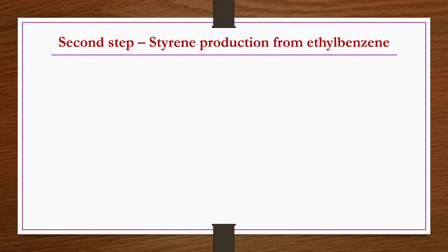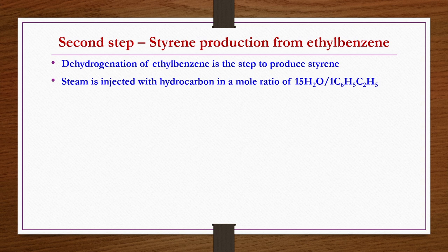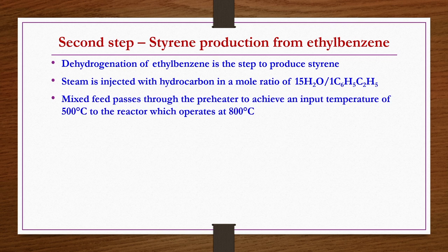Once pure ethylbenzene is obtained, dehydrogenation is carried out to get styrene in the second step. Steam is injected with hydrocarbon in a mole ratio of 15 moles of steam per 1 mole of ethylbenzene. The mixed feed passes through a preheater to achieve an input temperature of 500°C to the reactor, which operates at 800°C. Achieving such high temperature within the reactor by fuels or electric furnace alone would not give good energy economy, so preheating the feed to 500°C reduces the reactor duty.